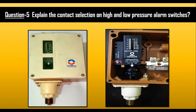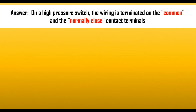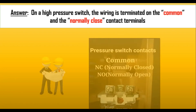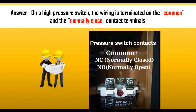The fifth question is: explain the contact selection on high and low pressure alarm switches — meaning how we make contacts for high pressure and low pressure in a pressure switch. On a high pressure switch, the wiring is terminated on the common and normally closed (NC) contact terminals. A pressure switch has three contacts: common, normally closed (NC), and normally open (NO).